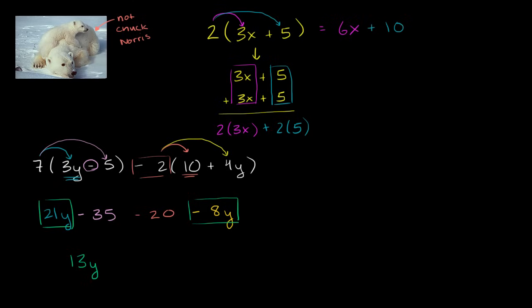And then I have negative 35, and then I have negative 35 minus 20. And so that's just going to simplify to negative 55. So this whole thing simplified, using a little bit of the distributive property and combining similar or like terms, we got to 13y minus 55.